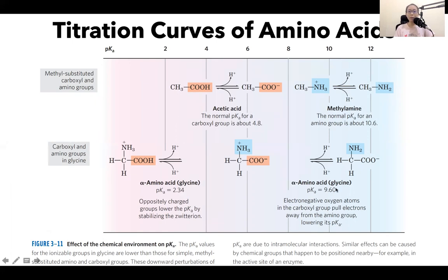Again, we see that the pKa for the amino group of an amino acid is lower than that of the pKa for methylamine.